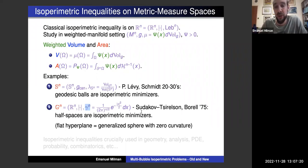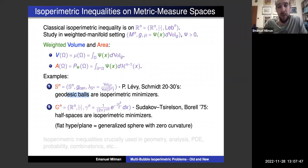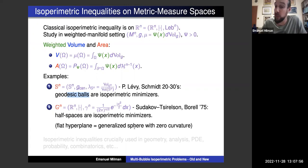On Sⁿ, a classical result almost 100 years old due to Lévy and Schmidt shows that geodesic balls are isoperimetric minimizers. For Gaussian space Gⁿ, a classical result from 1975 due to Sudakov and Tsirelson and independently Borell shows that half-spaces are isoperimetric minimizers — among all sets having a given Gaussian volume, half-spaces minimize Gaussian surface area. The moral is to think of these half-spaces as balls with center at infinity, whose boundaries — flat hyperplanes — are generalized spheres with zero curvature.